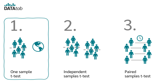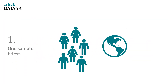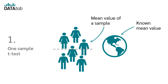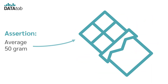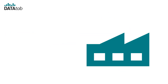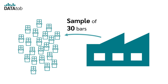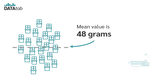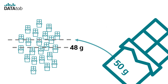When do we use a one-sample t-test? We use the one-sample t-test when we want to compare the mean of a sample with a known reference mean. For example, a chocolate bar manufacturer claims that its chocolate bars weigh an average of 50 grams. To check this, we take a sample of 30 bars and weigh them. The mean value of this sample is 48 grams. We can use a one-sample t-test to check if the mean of 48 grams is significantly different from the claimed 50 grams.